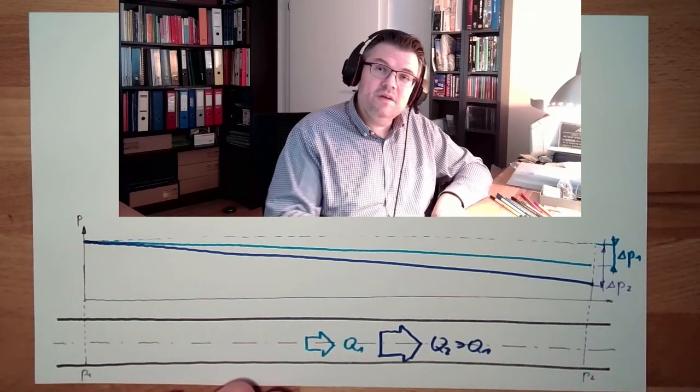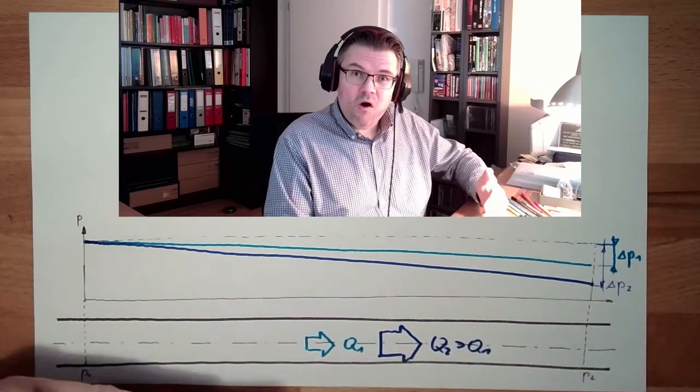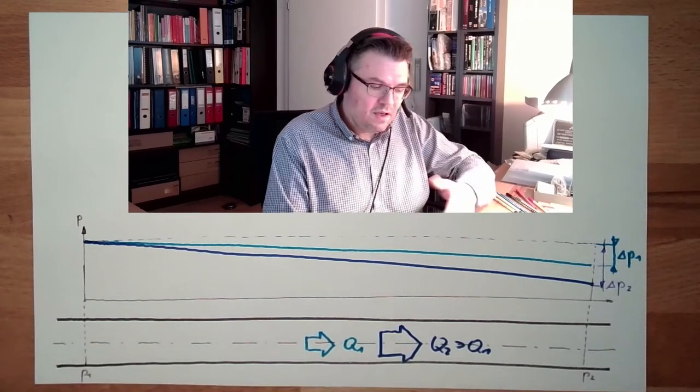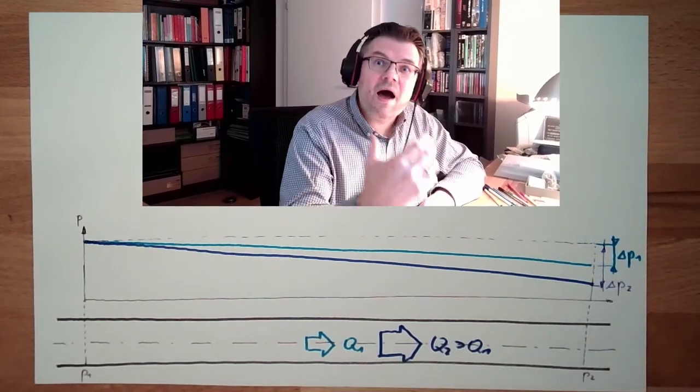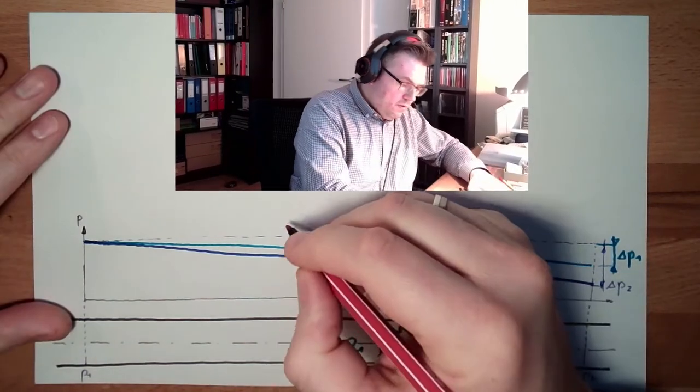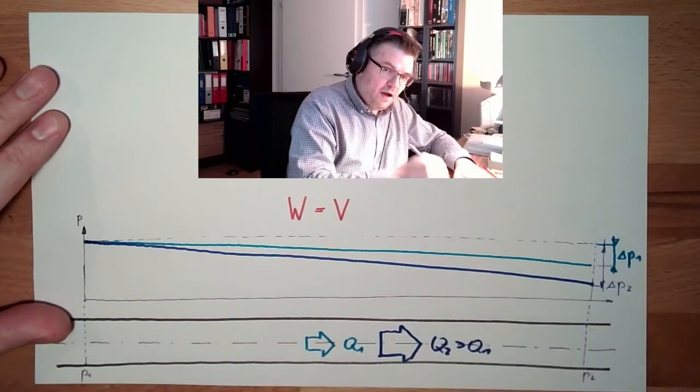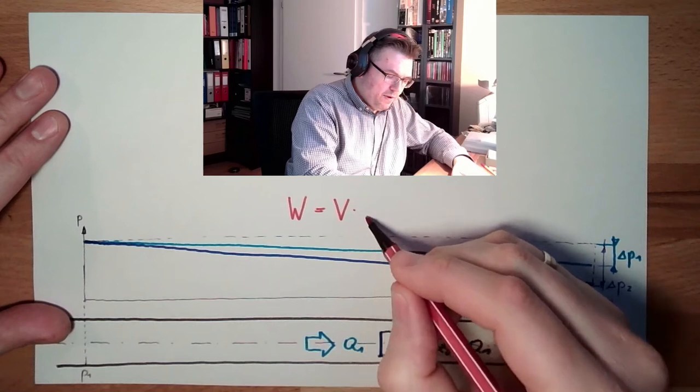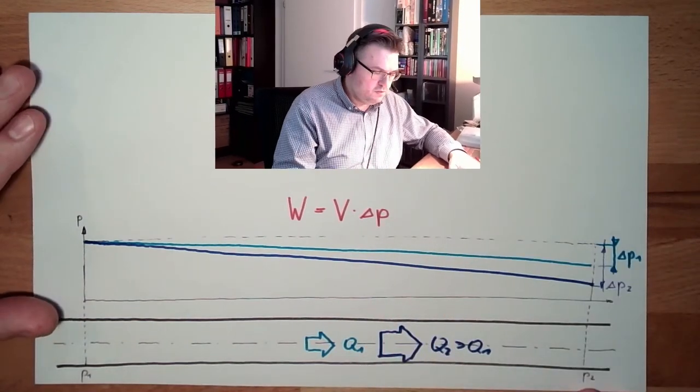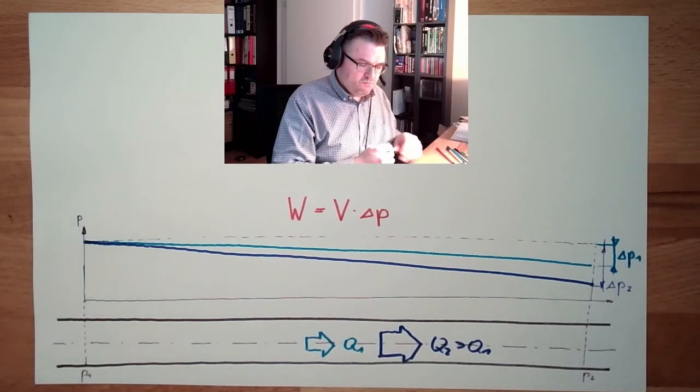How much cooling is necessary depends on the flow. How many liters, cubic meters I pass, and how much pressure drop I'm producing because of this. So, this work, which I have to get rid of, is the volume I've pumped through multiplied by the pressure drop or the pressure change. So, this actually should work.